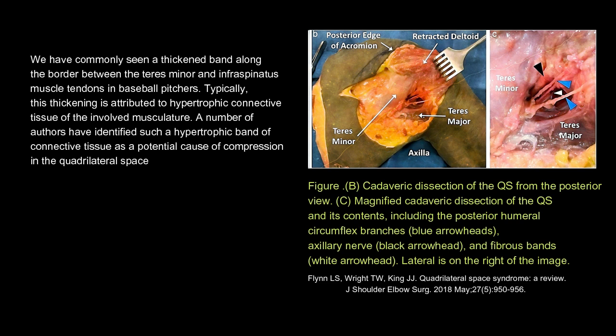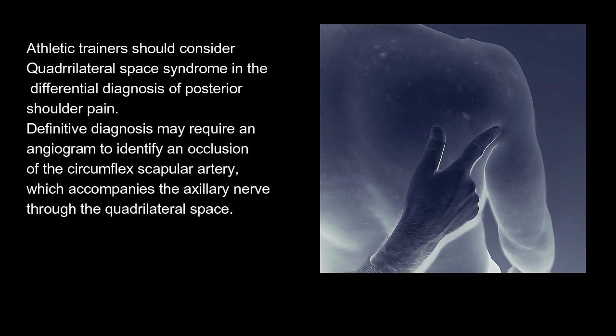Cadaveric dissection of the quadrilateral space from the posterior view shows its contents, including the posterior humeral circumflex branches (blue arrowheads), axillary nerve (black arrowhead), and fibrous bands (white arrowhead), with lateral on the right of the image. Athletic trainers should consider Quadrilateral Space Syndrome in the differential diagnosis of posterior shoulder pain. Definitive diagnosis may require an angiogram to identify an occlusion of the circumflex scapular artery, which accompanies the axillary nerve through the quadrilateral space.